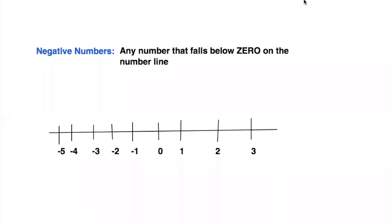So before we start, I thought a definition would be helpful. A negative number is any number that falls below zero on the number line. So this would mean any number in this range. Keep in mind, zero is not a negative number — zero is not positive or negative. So it's not included, but any of these numbers are negative because they fall below zero on the number line.